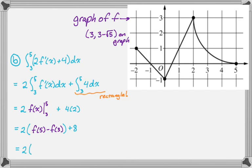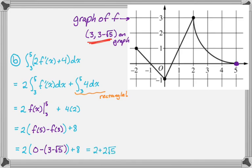So it's going to be two times [f(5) minus f(3)] plus eight. Looking at the graph, f(5) is zero. For f(3), remember that weird point we were told is on the graph? This is where we use it: f(3) is three minus root 5. Adding eight and distributing, you end up with two plus two root 5. So this integral equals two plus two root 5.